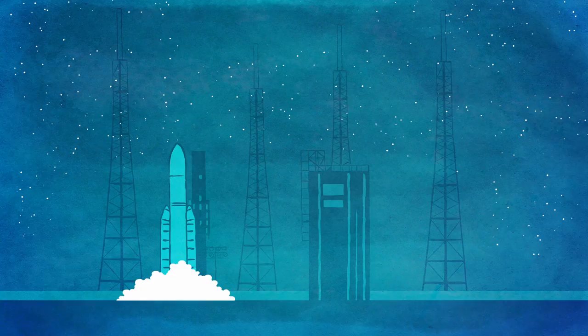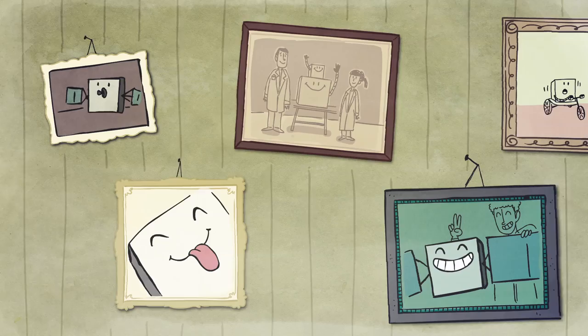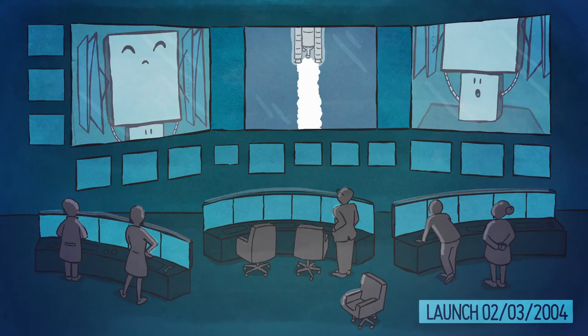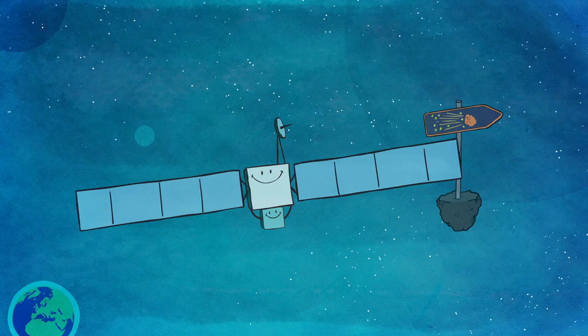Rosetta carried a little passenger, the lander Philae. It had taken many years to dream up this mission. And now, on the 2nd of March 2004, Rosetta was on her way to the far-off comet 67P Churyumov-Gerasimenko.